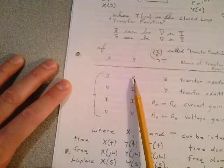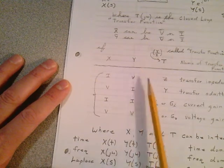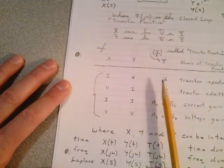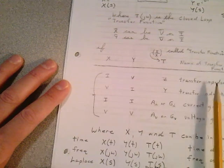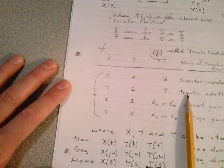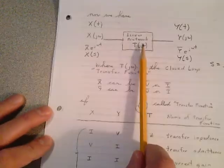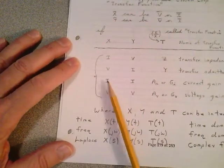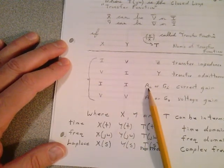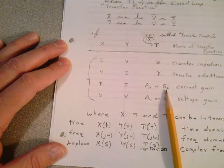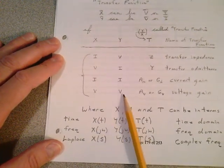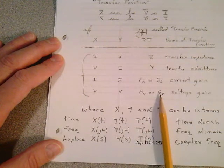What if current is the input and you monitor voltage as the output? You form the ratio and you get impedance — they refer to that T of s as a transfer impedance. What if you have voltage on the input and current on the output? Form that ratio and you get admittance — we call that a transfer admittance function. If you have current on the input and current on the output, that's a current gain. If you have voltage on the input and voltage on the output, that's a voltage gain.